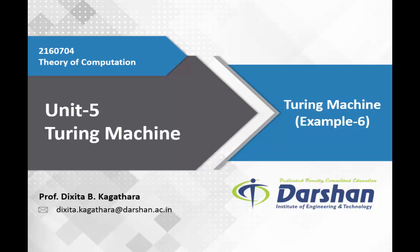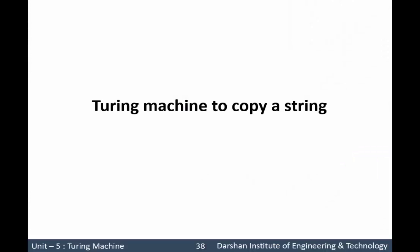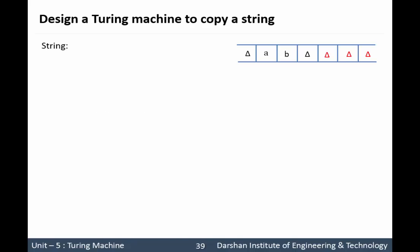In this video lecture we are going to study another example of a Turing machine. Here we will study a Turing machine which allows us to copy a string. For example, here we have string 'ab'. If we make a copy of this string then it will be delta ab delta ab.